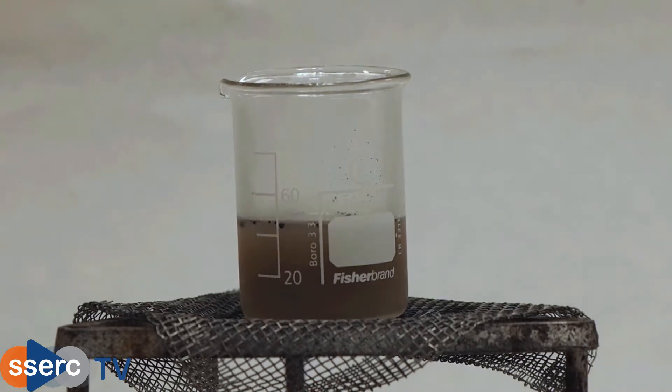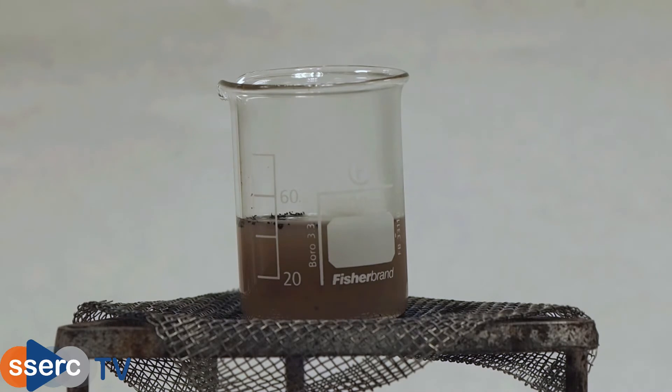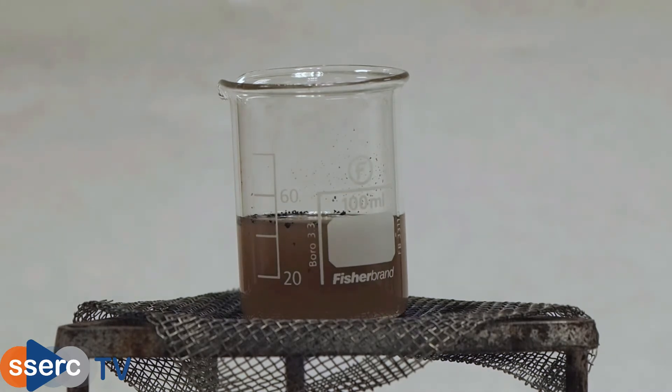We do this by boiling it with dilute nitric acid, 40 cubic centimeters in this case. Add the nitric acid to the ash and bring it to the boil and keep boiling for about five minutes.